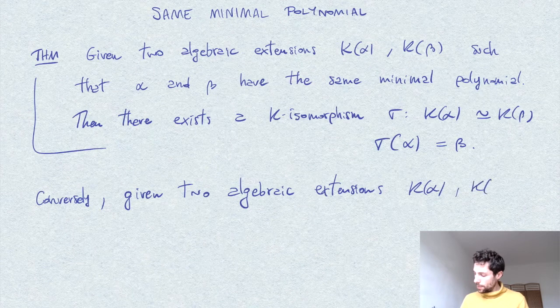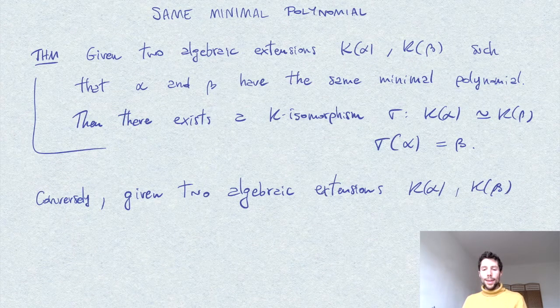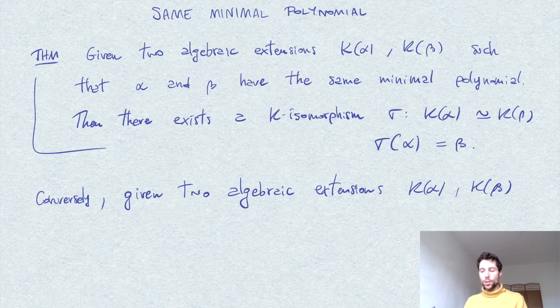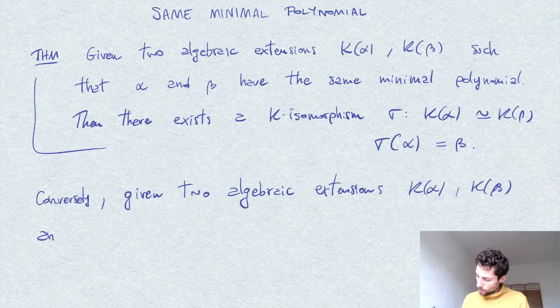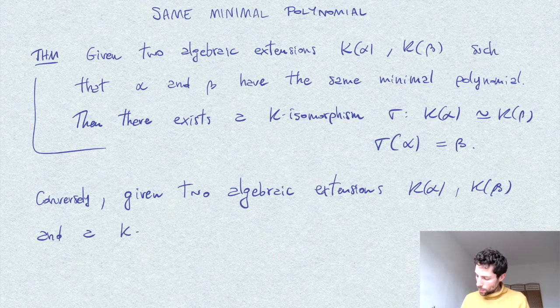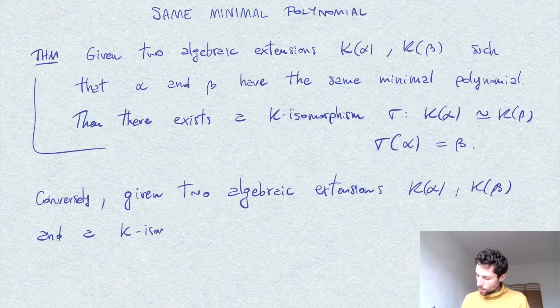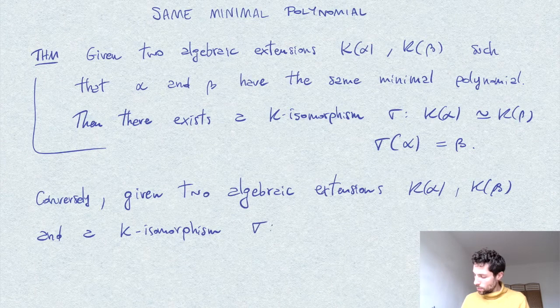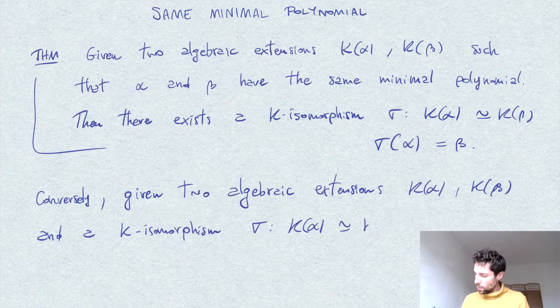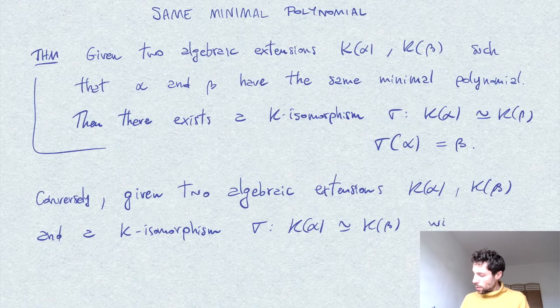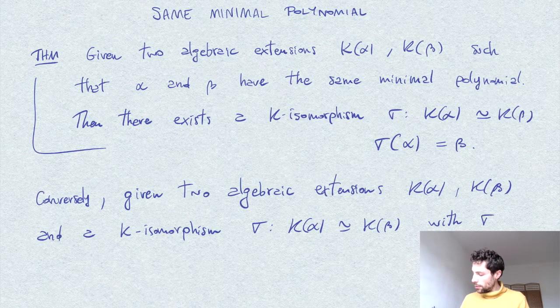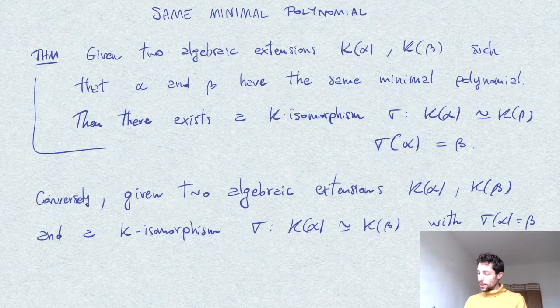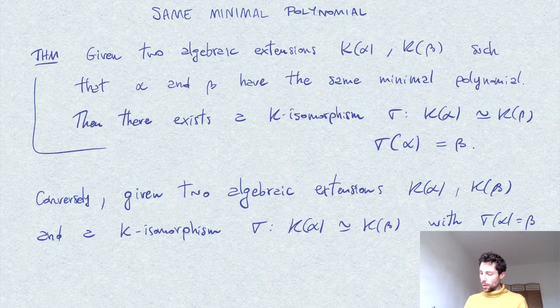and suppose we have such a K-isomorphism. If we have such a K-isomorphism with σ(α) = β, then we have that necessarily α and β have the same minimum polynomial.